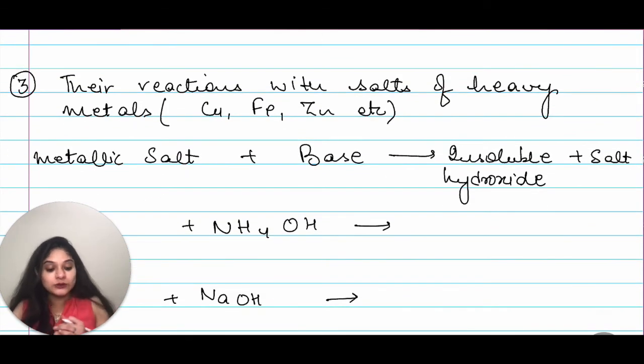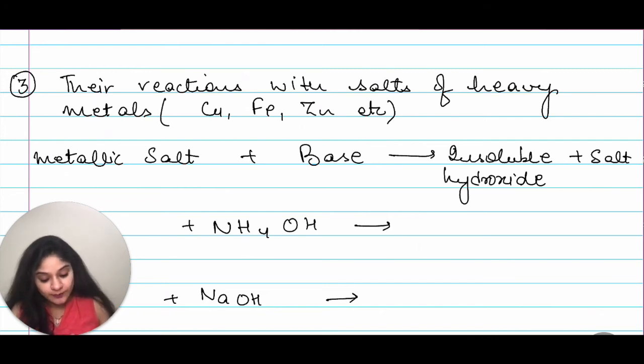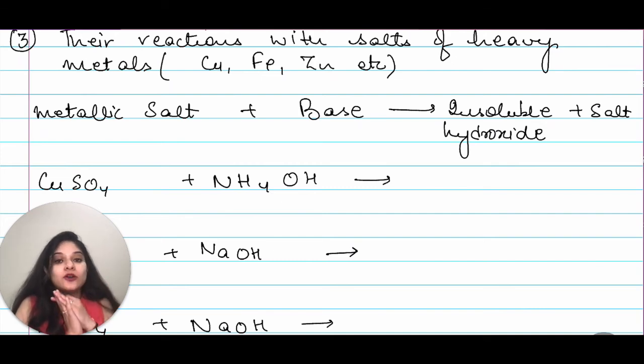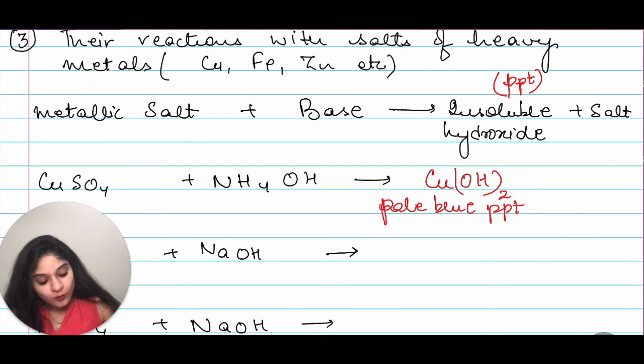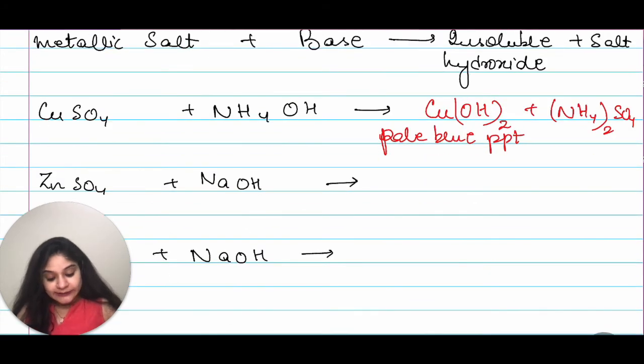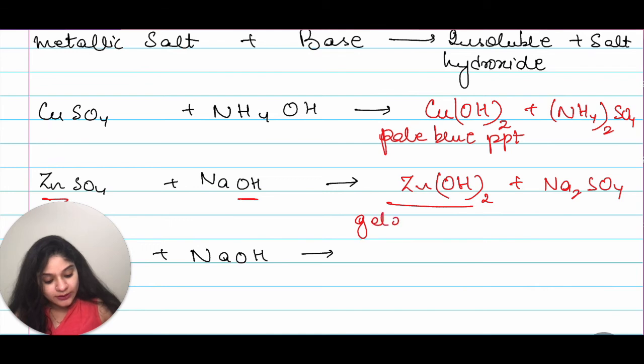Moving on. Their reaction with salts of heavy metals. You have CuSO4. Metallic salt plus base will give you insoluble hydroxide plus salt. What is insoluble hydroxide? That means, it would be in the form of precipitate. CuSO4 plus NH4OH will give me Cu(OH)2. That is, your pale blue precipitate. Along with that, you will get (NH4)2SO4. I have ZnSO4 plus NaOH that is Zn(OH)2 plus Na2SO4 and this is gelatinous white precipitate.